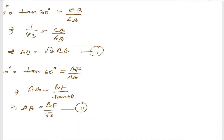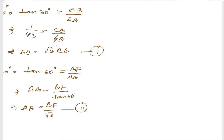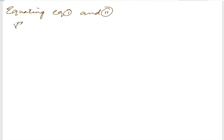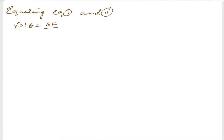Now let us equate equation number 1 and equation number 2. Equating: root 3 times CB equals BF divided by root 3. So root 3 times root 3 times CB equals BF, giving 3CB equals BF.